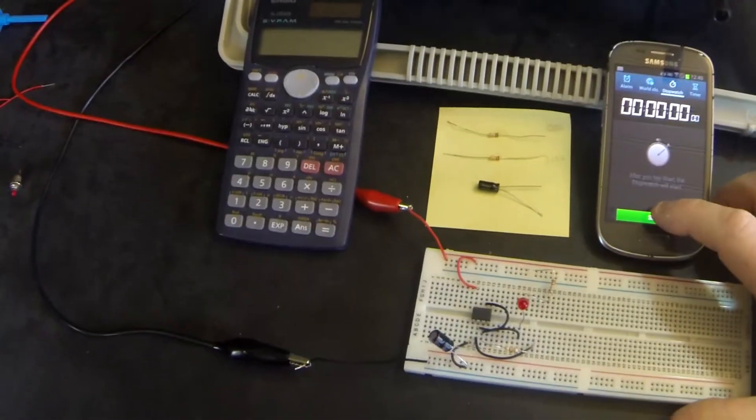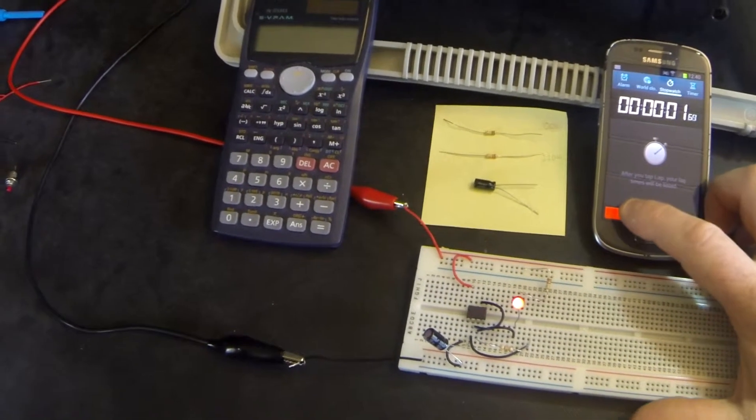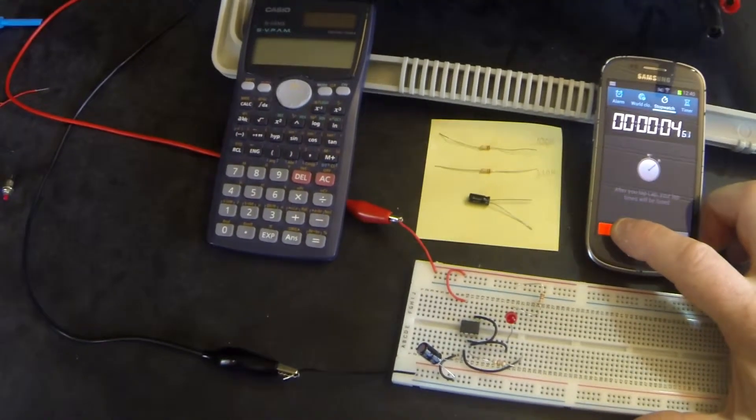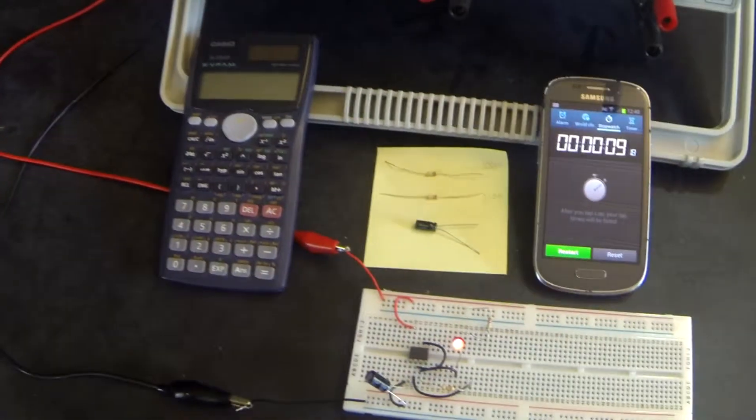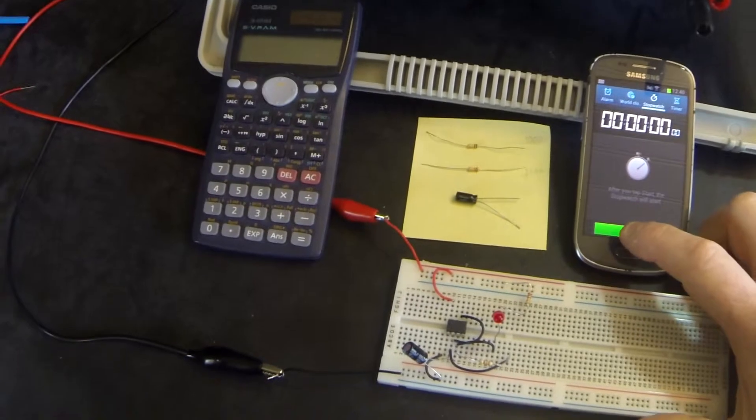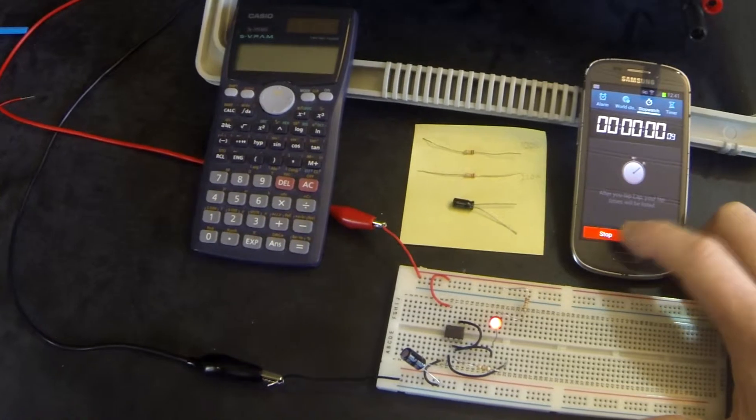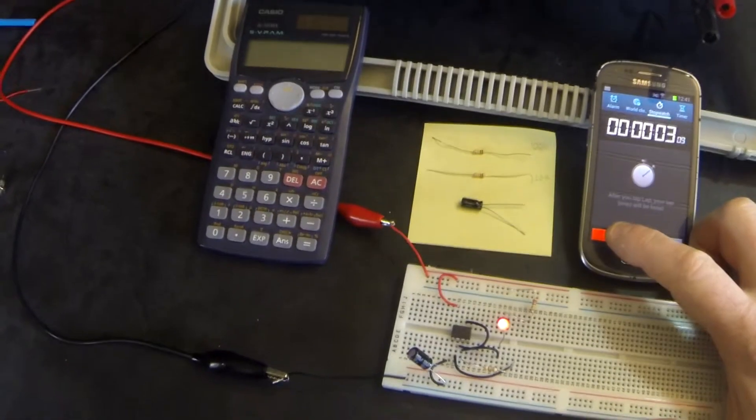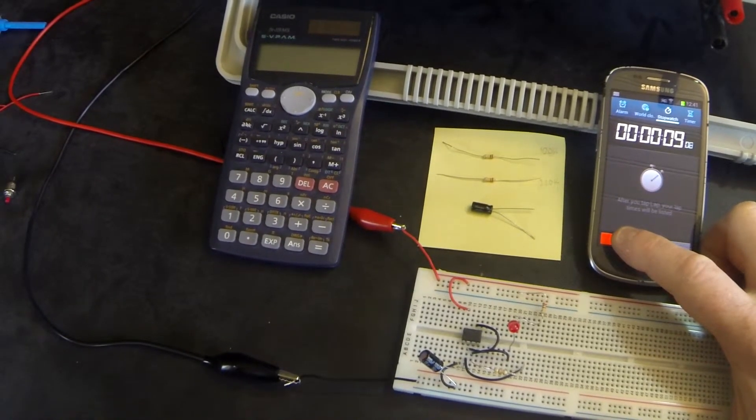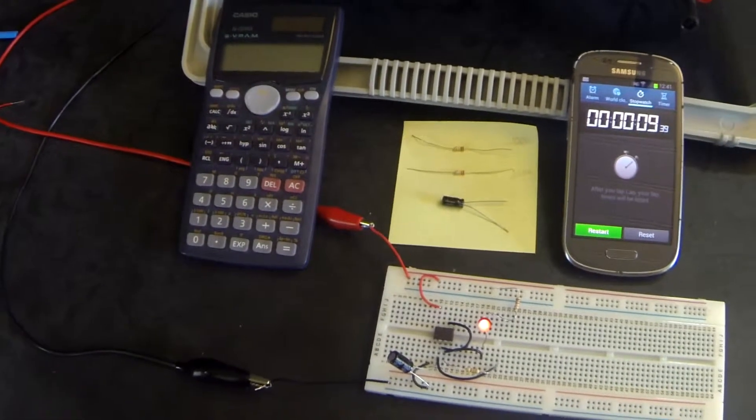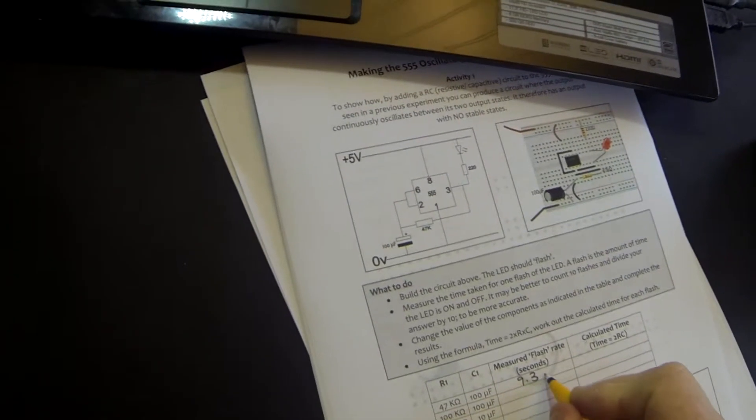So when that LED comes on, I'm going to press start. And when it comes on again, I'm going to press stop. 9.18 seconds. Let's do that one more time. Wait for it to come on. It goes off. And wait for it to come back on again. I'll press stop. 9.39 seconds. Okay, let's enter that into our table. I'm going to put an average of those two values. 9.3 seconds.